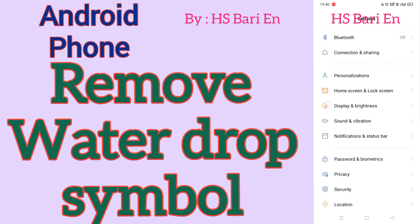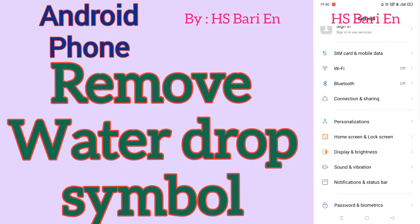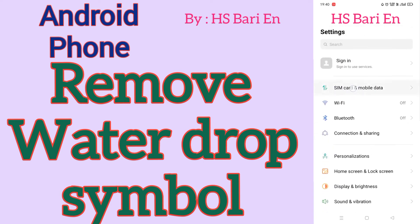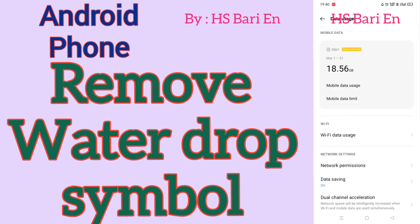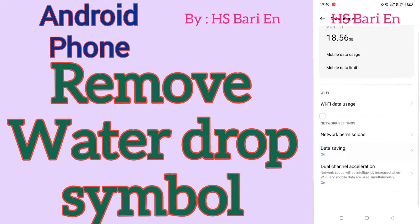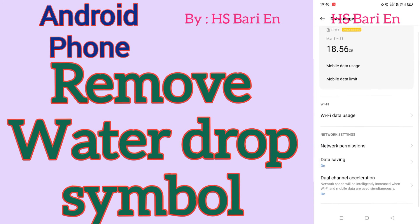So basically, what is this? In my smartphone you have to go to your SIM card and mobile data settings, and inside this you have to go to data usage settings. Basically friends, this water drop symbol is nothing — it just means your data saver is enabled. You have enabled the data saver function of your smartphone, that's why this water drop symbol is showing there.